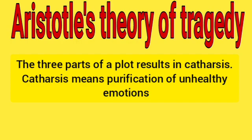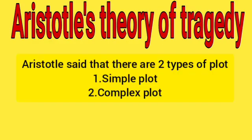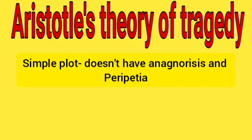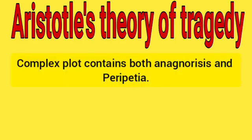These three parts of the plot result in catharsis. Catharsis means purification of unhealthy emotions. Aristotle said there are two types of plots: the first is a simple plot, and the second is a complex plot. A simple plot does not have anagnorisis and peripeteia, while a complex plot contains both anagnorisis and peripeteia.